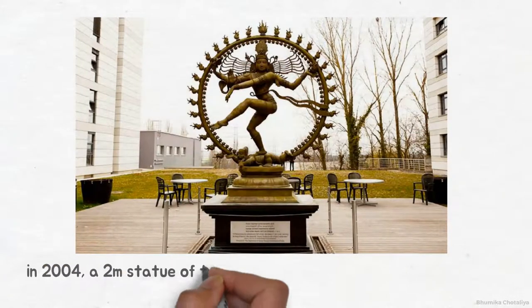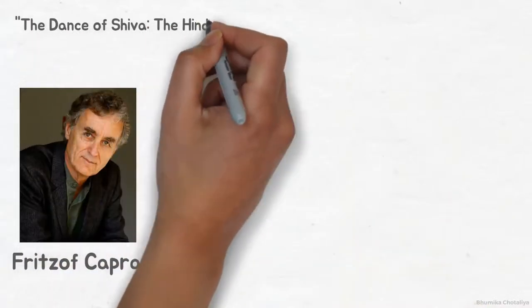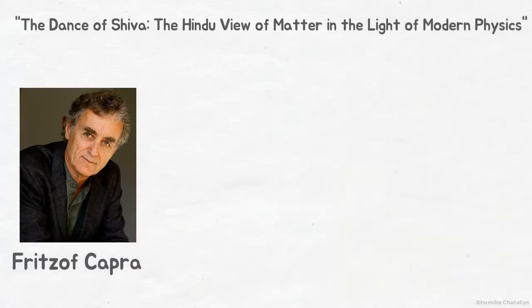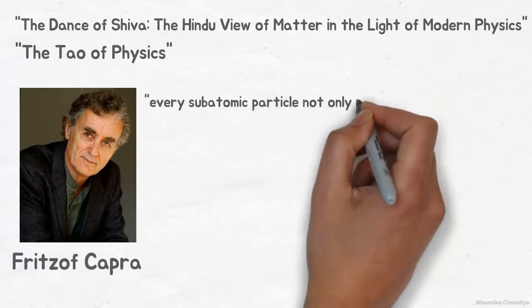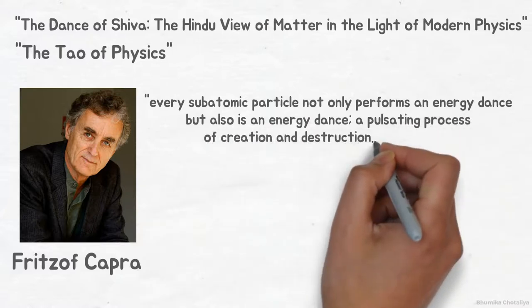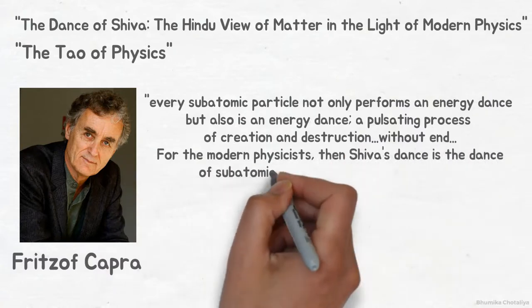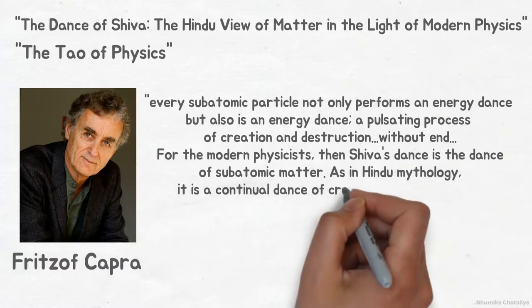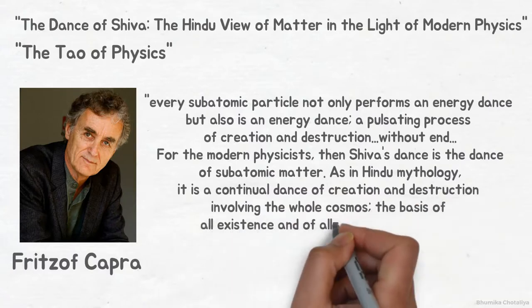In 2004, a two-meter statue of dancing Shiva was unveiled at the European Centre for Research in Particle Physics in Geneva. Fritjof Capra, in his article 'The Dance of Shiva: the Hindu view of matter in the light of modern physics,' and later in the Tao of Physics, beautifully relates Nataraj's dance with modern physics. He says that every subatomic particle not only performs an energy dance but also is an energy dance, a pulsing process of creation and destruction without end. For the modern physicist, then, Shiva's dance is the dance of subatomic matter. As in Hindu mythology, it is a continual dance of creation and destruction involving the whole cosmos, the basis of all existence and of all natural phenomena.